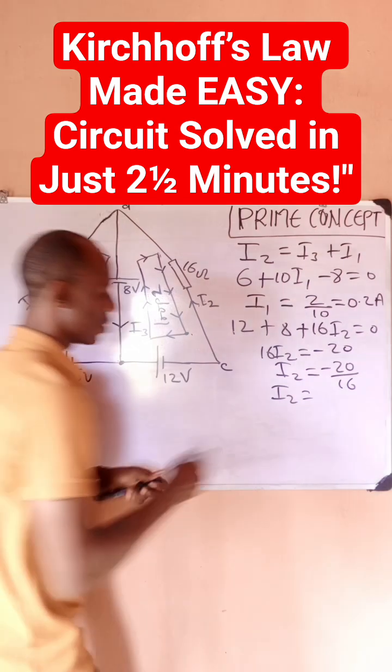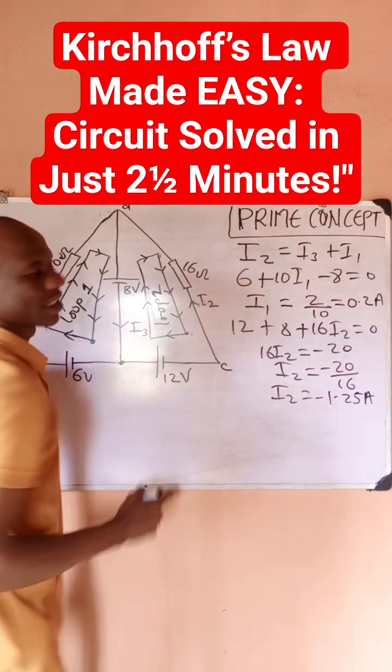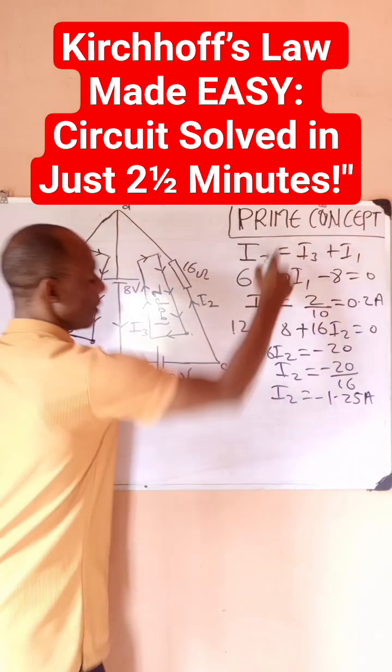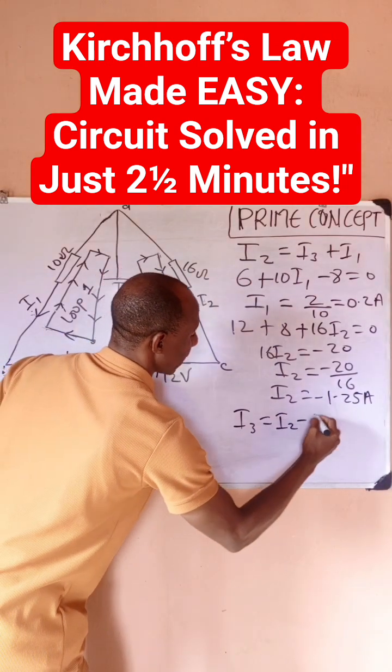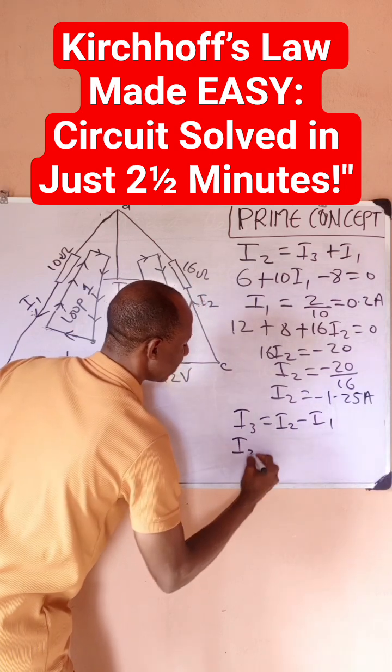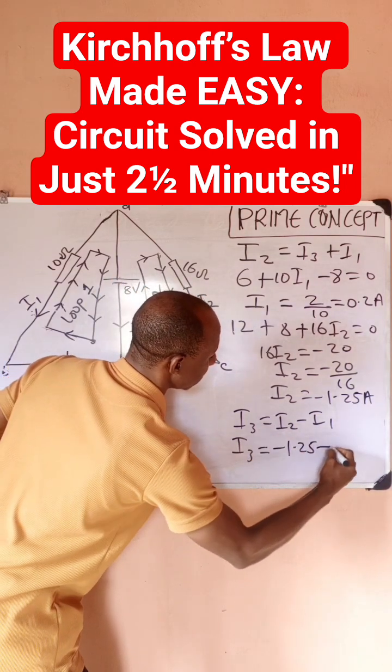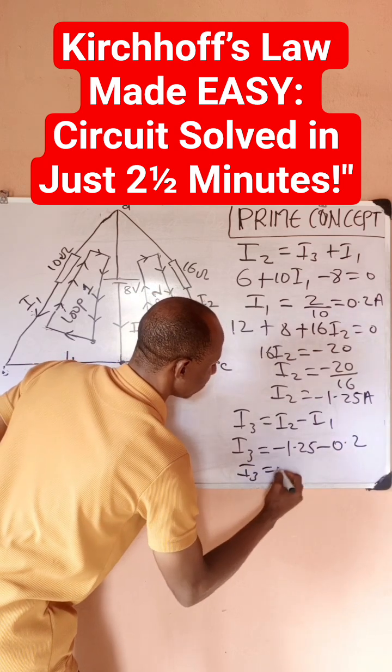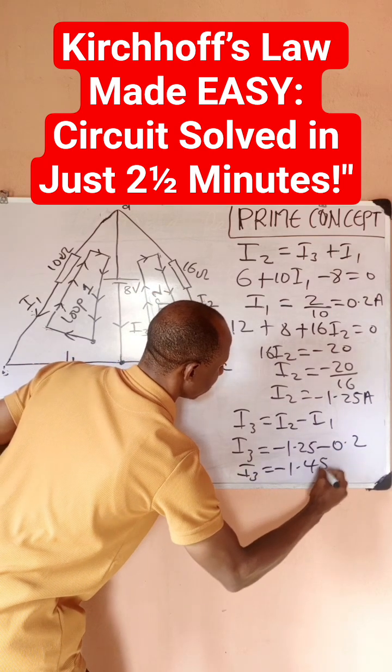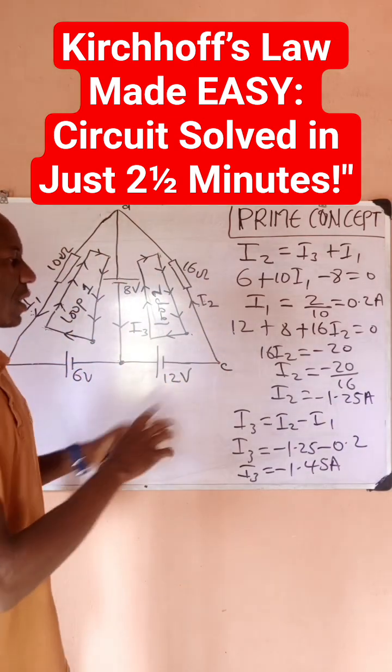And looking from this first equation, I can quickly get I3, seeing that I3 is going to be I2 minus I1. And then I3 becomes I2, which is minus 1.25, minus I1, which is 0.2. Then my I3 becomes minus 1.45 amperes when you subtract. So I believe this concept is very clear.